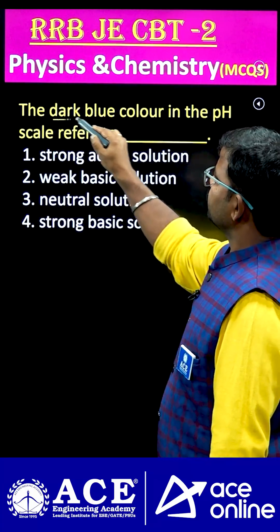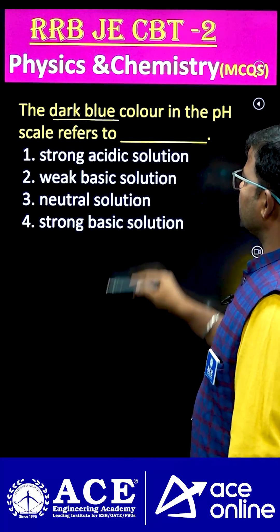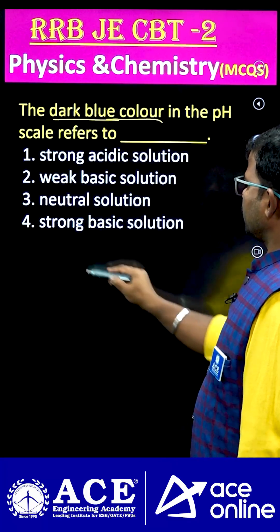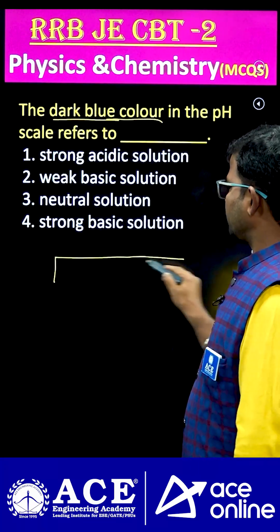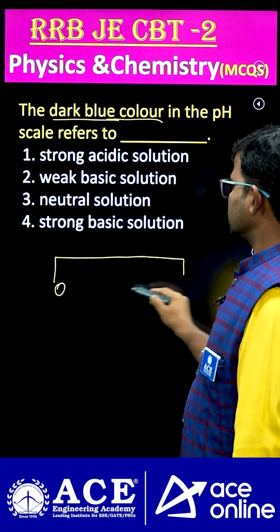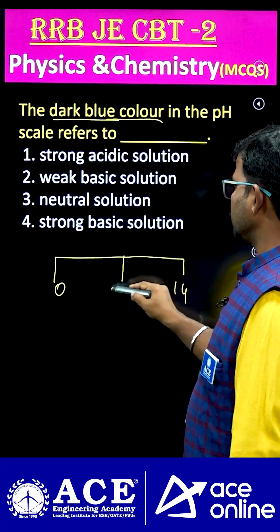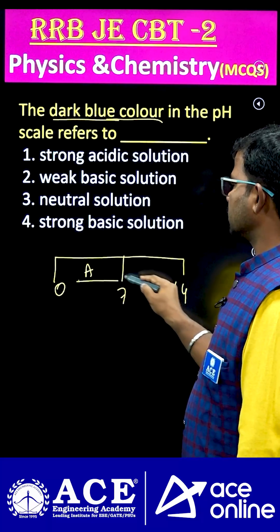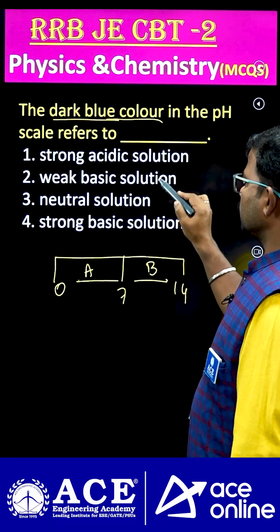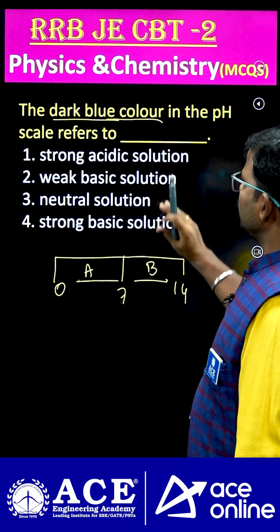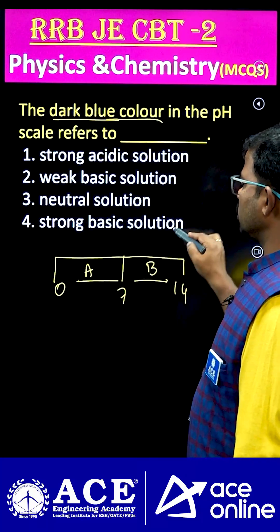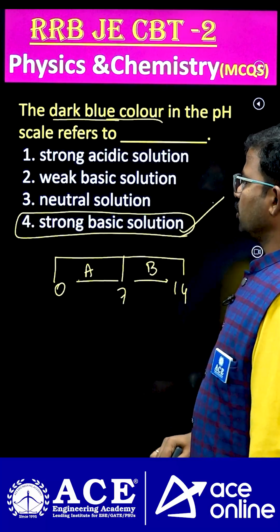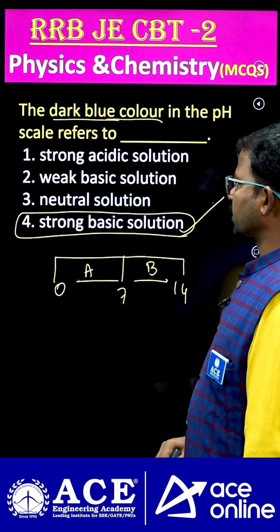So here, dark blue color — if you consider the pH scale, these values are calibrated between 0 to 14. So below 7, those are acids. Above 7, those are bases. So if the solution exhibits dark blue color, mostly those are strong bases. It means option 4 is the right answer.